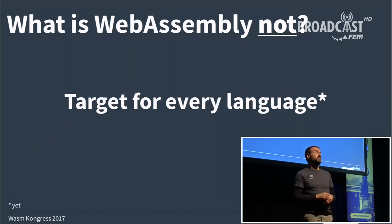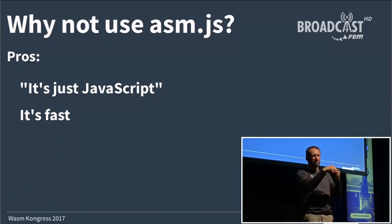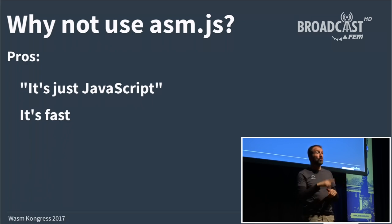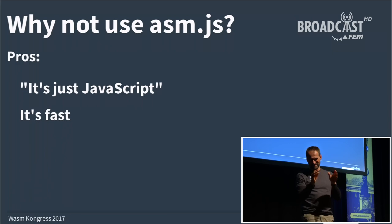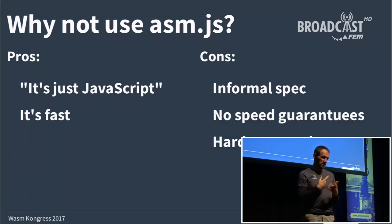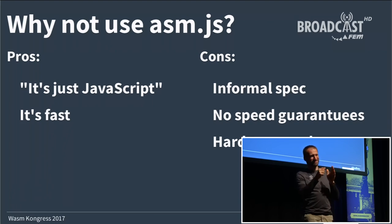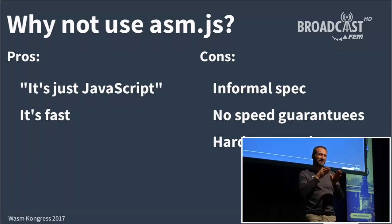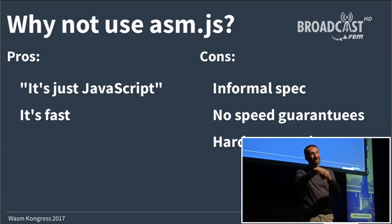You might wonder: why not just use asm.js? It has advantages — after all it's just JavaScript, every browser can execute it, and it's quite fast in browsers that implemented certain optimizations for it. But there are disadvantages too: there is no fully agreed formal specification, there are no guarantees you'll hit the optimized path, and it's very hard to extend. Since it's just JavaScript, you can't add features like threading or bigger integers.